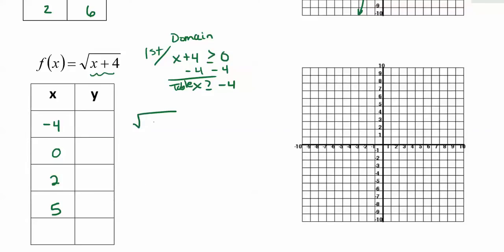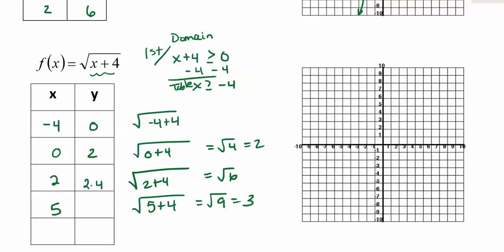So I get the square root of negative 4 plus 4, and that's the square root of 0 which is 0. I get the square root of 0 plus 4, and the square root of 4 is 2. I get the square root of 2 plus 4 which equals the square root of 6, and you could evaluate that using your square root button, 2.4 approximately. If I plug in a 5 I get the square root of 5 plus 4 which is the square root of 9 which is 3. So it's sometimes helpful to try to force it to be a perfect square number.